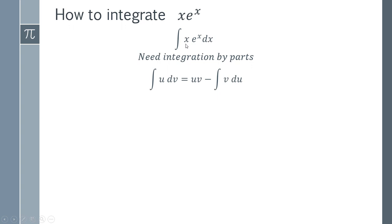But if we choose u to be equal to x, when we find du, we're going to have one. So this x is going to get simpler by choosing it as u. So we're going to let u equal x and we're going to let dv equal e to the x.